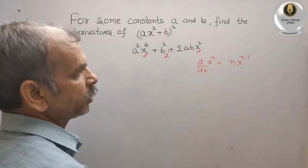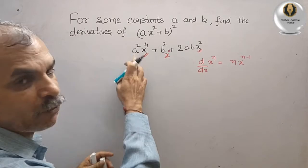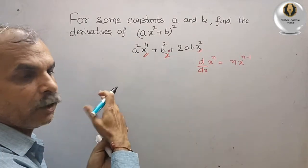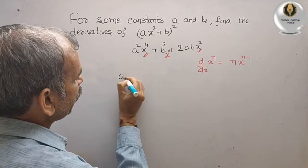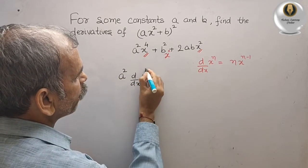This formula we will substitute here. What we will get? We will get: a² is the constant, it will come out. That means you will get a² d/dx of x to the power of 4.